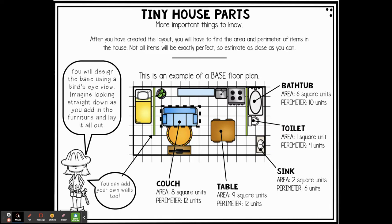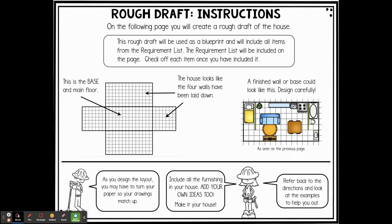They've got a bedroom to the left, a living room, a dining area, and their kitchen with a counter, sink, and stove. There's also their bathroom with a sink. The only thing I see possibly missing is a refrigerator. Now that doesn't mean they're completely finished with this. So when you're working on your rough draft, you're going to create a rough draft of the house. This rough draft will be used as a blueprint and will include all of the items from the requirement list. The requirement list will be included around the outside of the page — check off each item once you have included it.